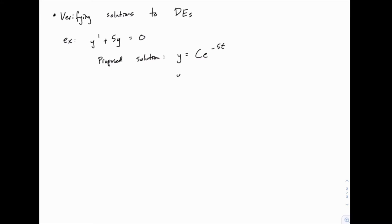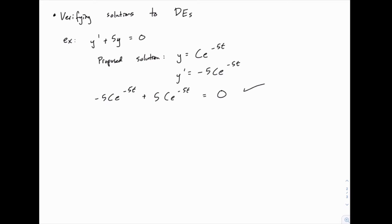So we simply take the derivative of the proposed solution, and the derivative of this would be negative 5 times c e to the negative 5t. Then all we do is substitute into the differential equation: replace y prime with negative 5c e to the negative 5t, plus 5 times y, c e to the negative 5t. Those two cancel each other out, so it does equal zero, and this proposed solution is confirmed.